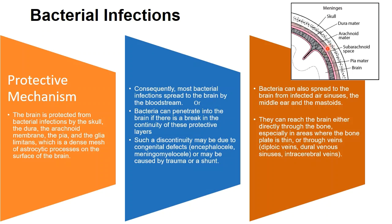Such a discontinuity may be due to congenital defects — for example, encephalocele or meningomyelocele — or due to trauma or a shunt. Bacteria can also spread to the brain from infected aero sinuses, the middle ear and the mastoid, since all of these are connected to the brain. They can reach the brain either directly through the bone, especially where the bone plate is thin, or through the veins — particularly the diploic veins, dural venous sinuses, or intracerebral veins.